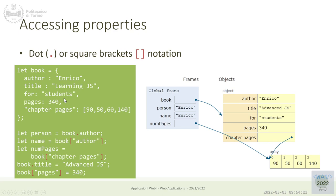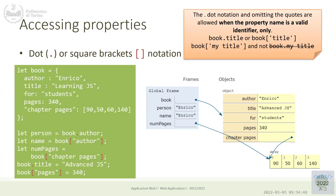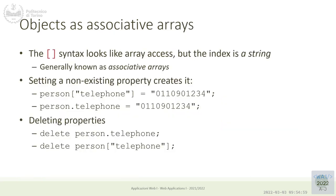Also use bracket notation when the property name is stored in a variable. If you don't know at write-time which property you want — perhaps because you're iterating — you can use square brackets with a variable whose string value is resolved at runtime. If we're using objects as objects, we normally use dot notation. If using objects as associative arrays, key names usually come from another array or list, so bracket notation is more appropriate.